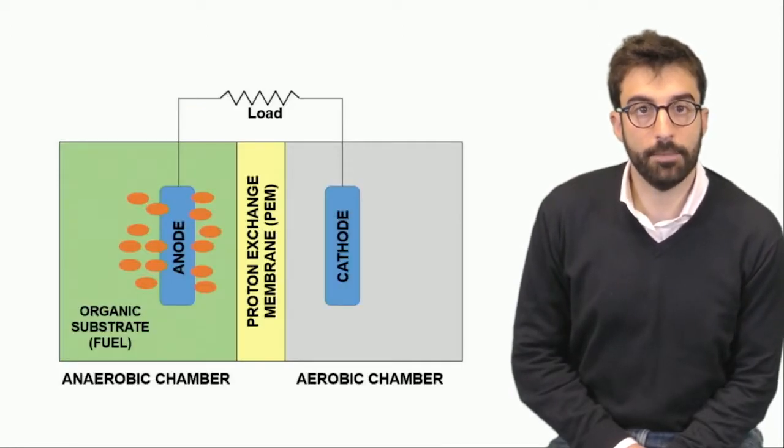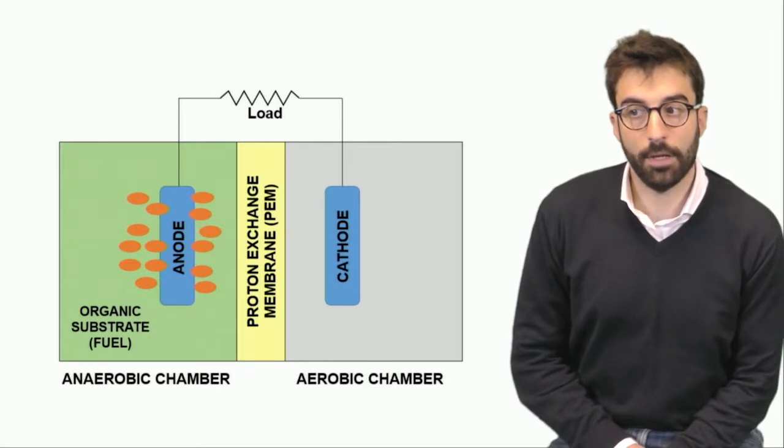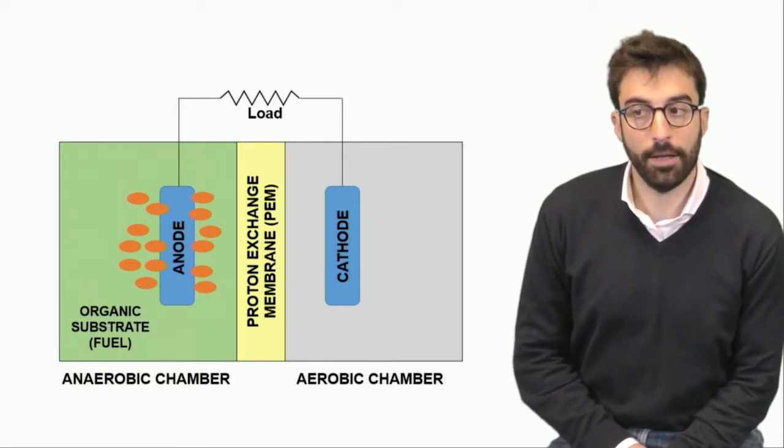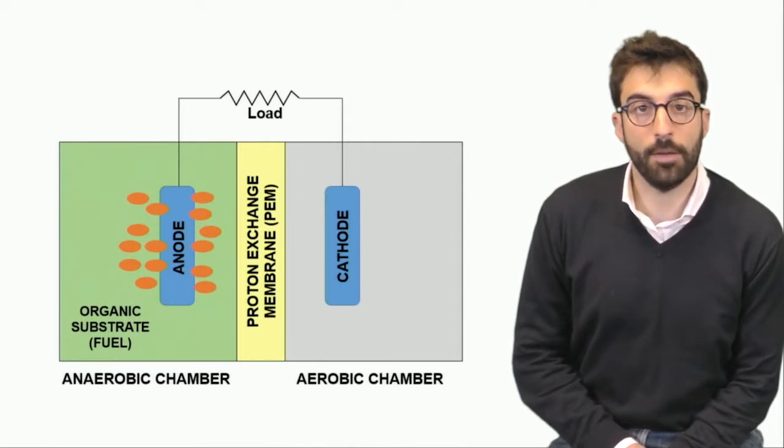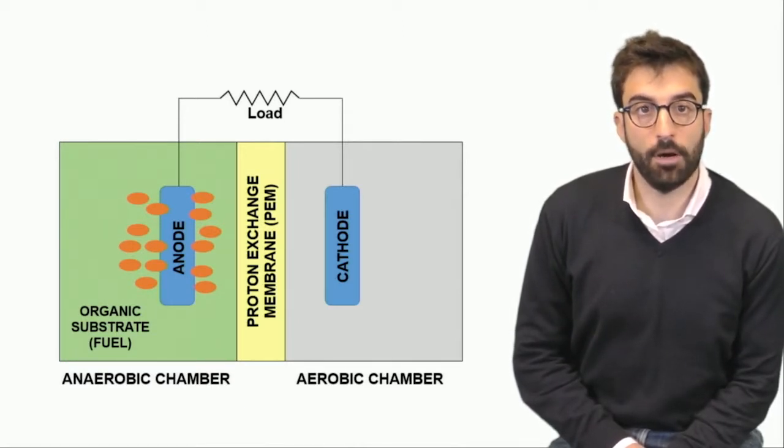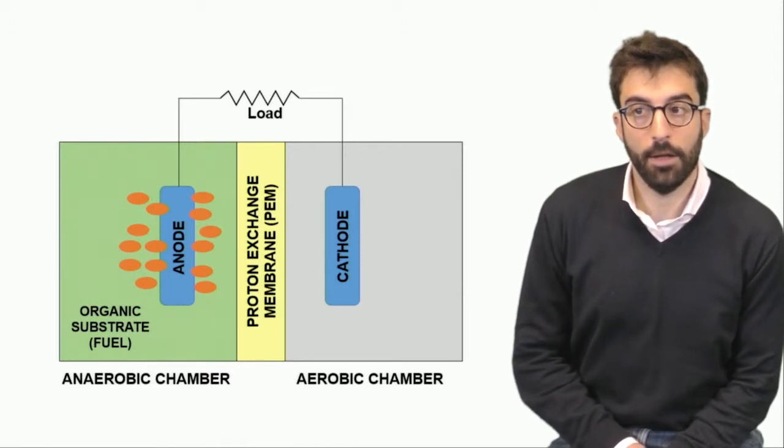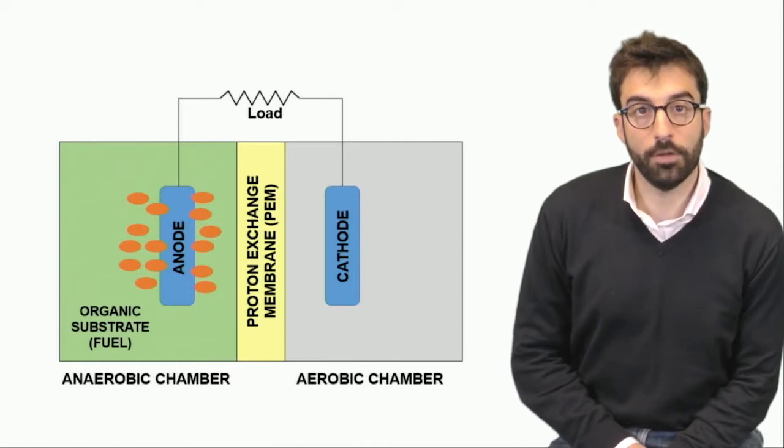But how exactly does a microbial fuel cell work? It's similar to other fuel cells, so we have three layers: an anodic chamber, an anode, and a cathode. They are placed into different chambers and there is a membrane that separates them, which is a proton exchange membrane. Materials are similar to the membranes of polymer electrolyte fuel cells. Of course there is an external circuit that goes into a load to produce electricity for users.